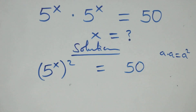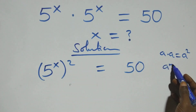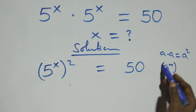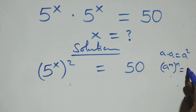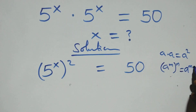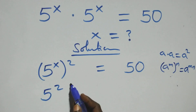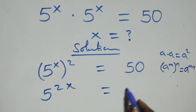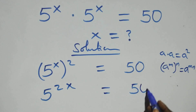The next step uses the rule that when we have a raised to power m, all raised to power n, this is the same thing as a raised to power m times n. So the power multiplies and we get 5 raised to power 2x equals 50.